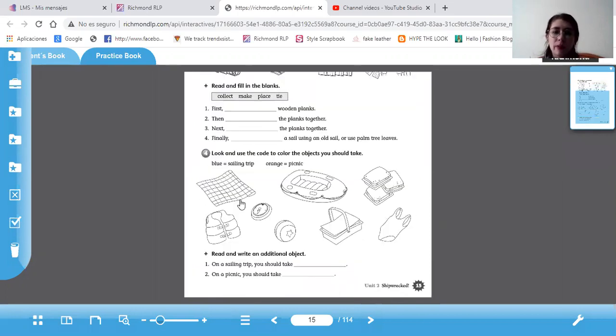Acá van a usar los códigos para colorear. Con color blue van a colorear lo que sea para viajes de sailing trip. Para viajes de navegar en barco. Orange, lo que sea de picnic. Lo colorean con esos dos colores. Y después van a escribir un objeto adicional para sailing trip. Para llevar a un sailing trip. Y otro para un picnic. De acuerdo.